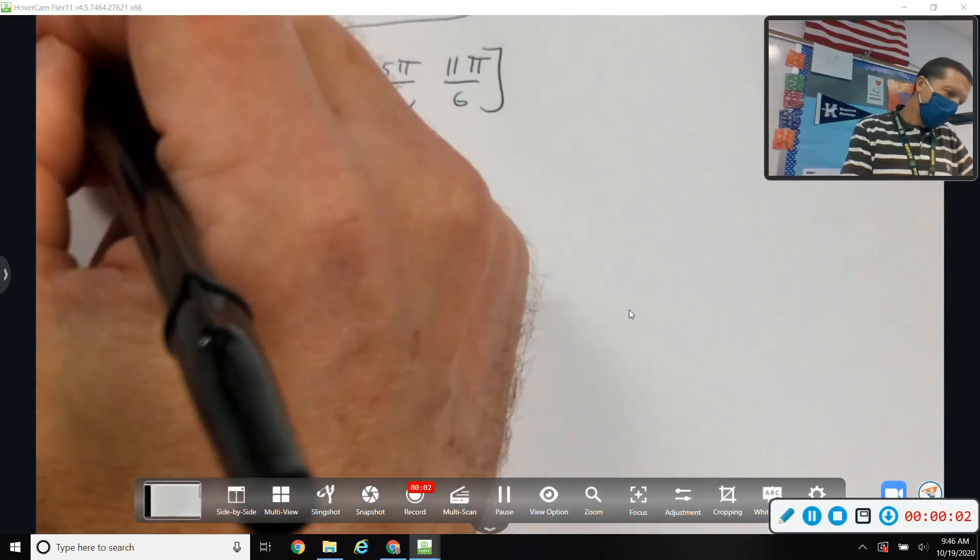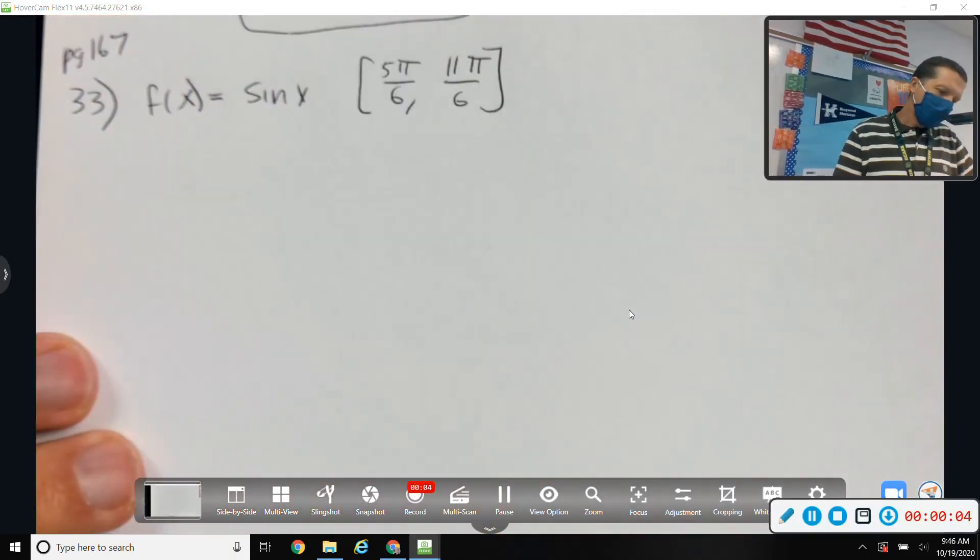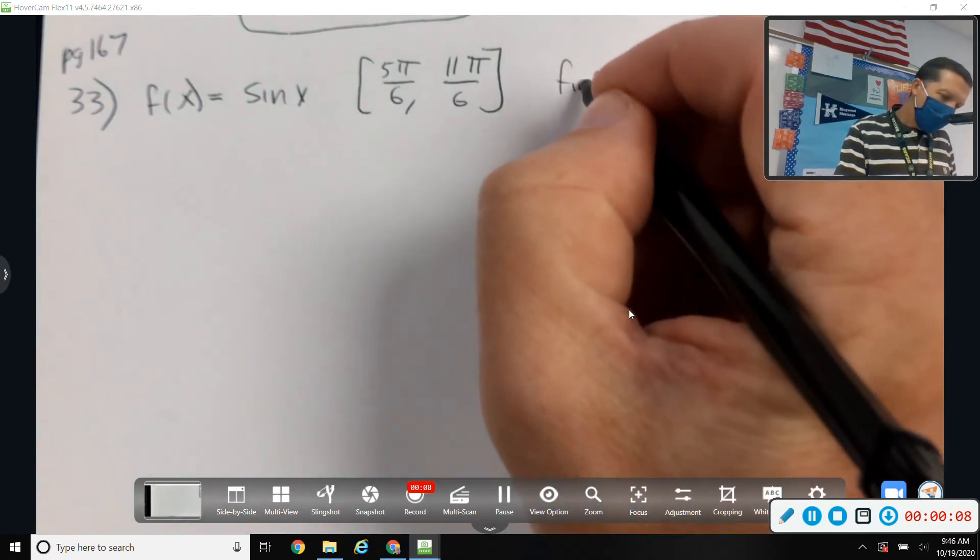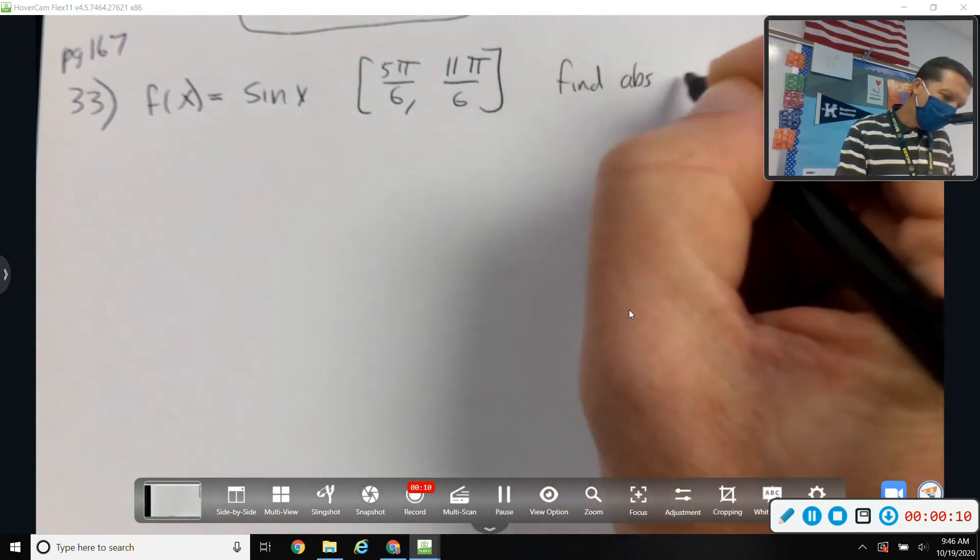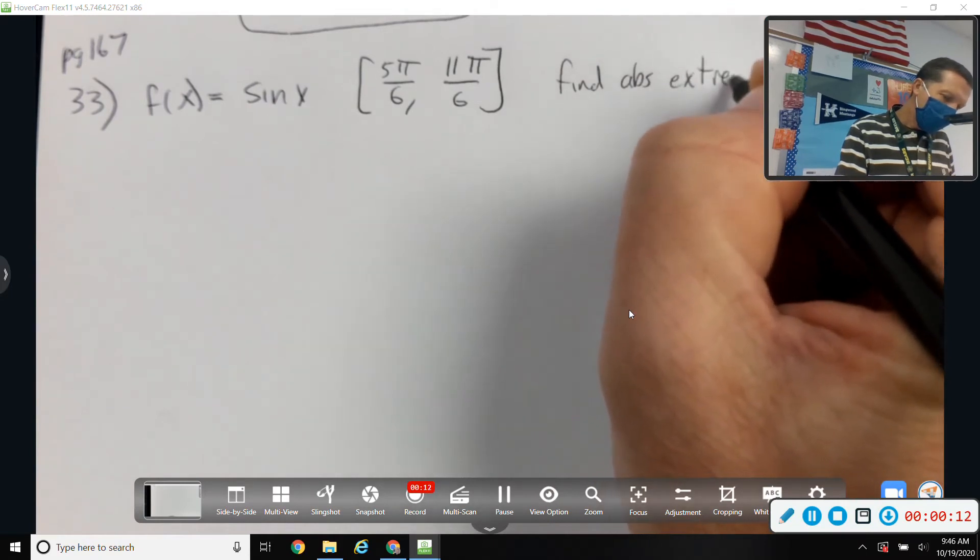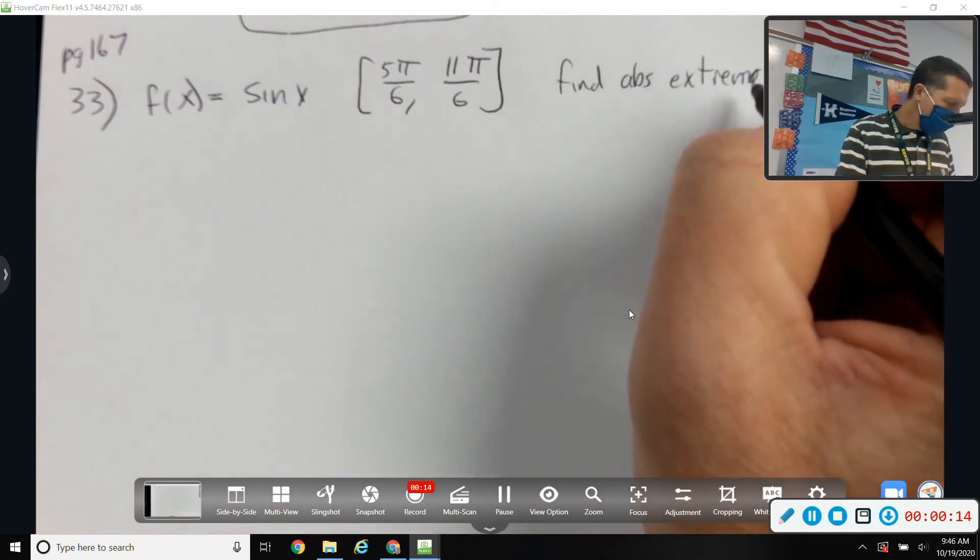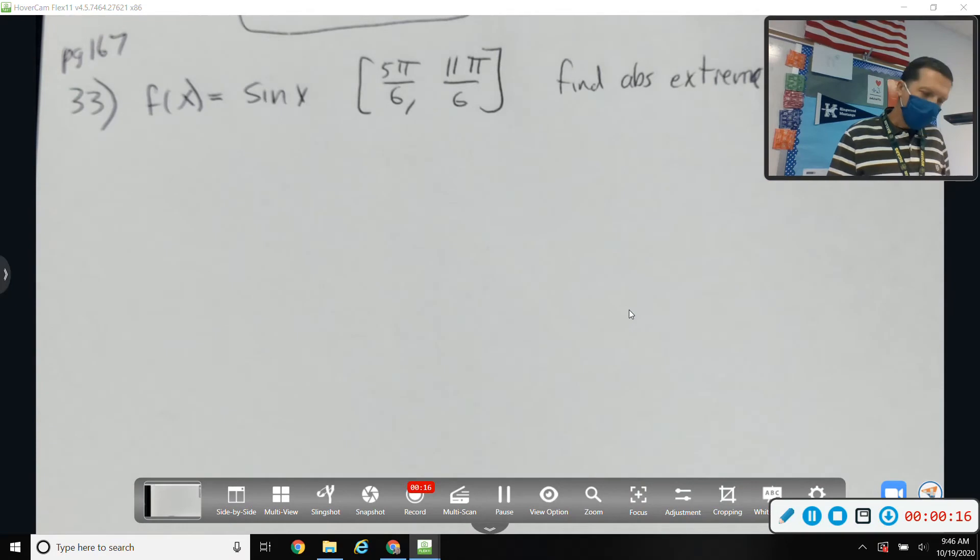All right, number 33 from page 167, and the directions for this one are find the absolute extrema of the function on the closed interval.